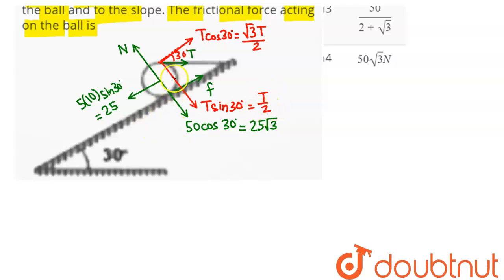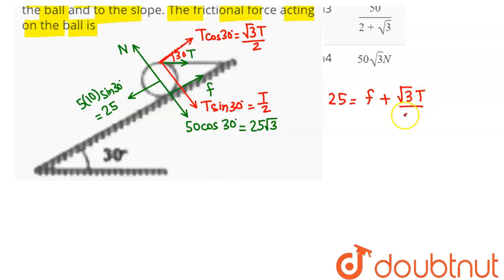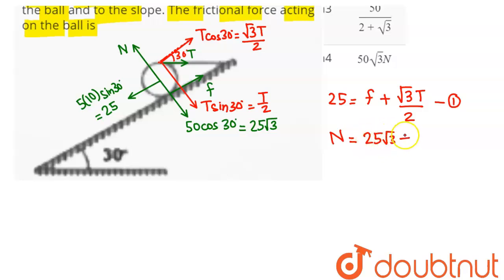Balancing forces along the inclined plane gives Equation 1: 25 = friction + (√3)T/2. Balancing forces perpendicular to the inclined plane gives Equation 2: N = 25√3 + T/2.